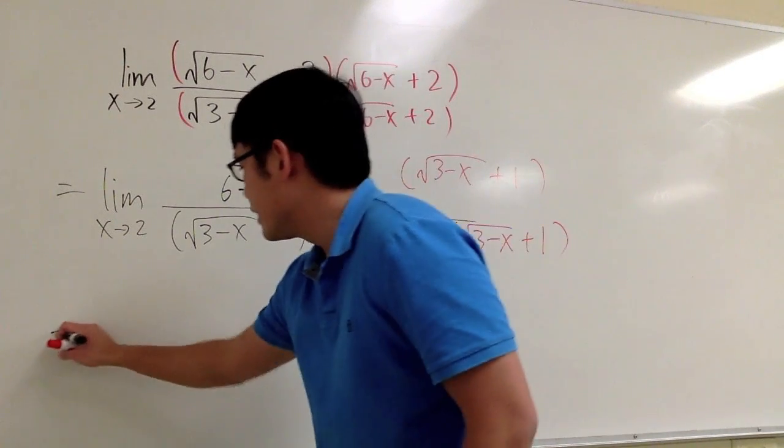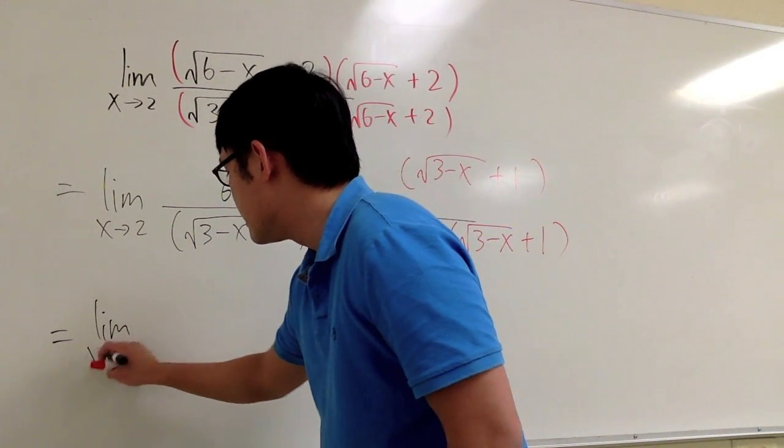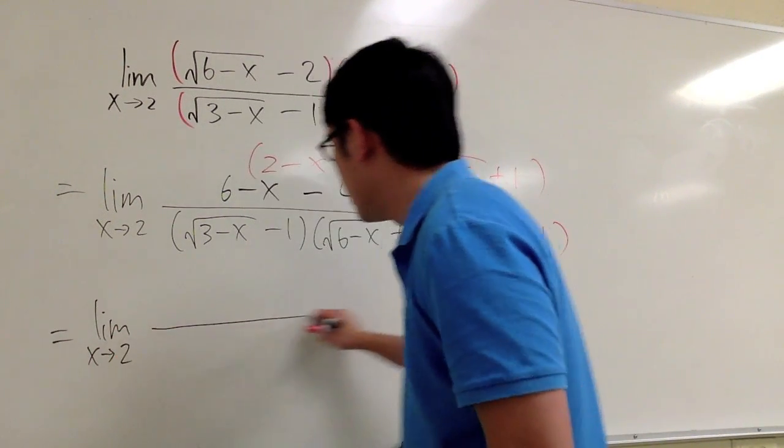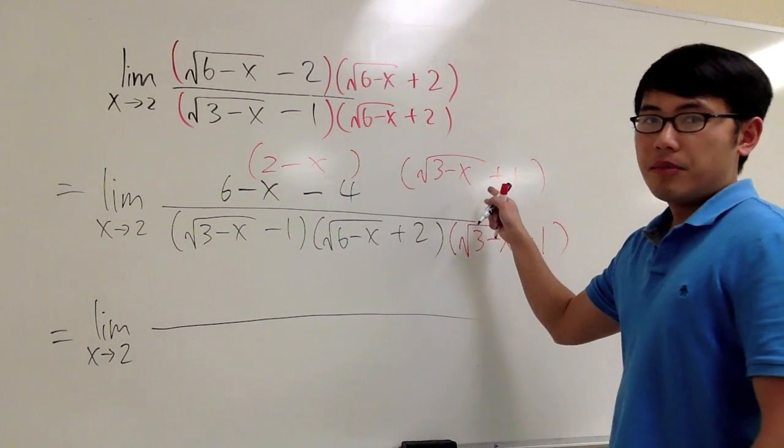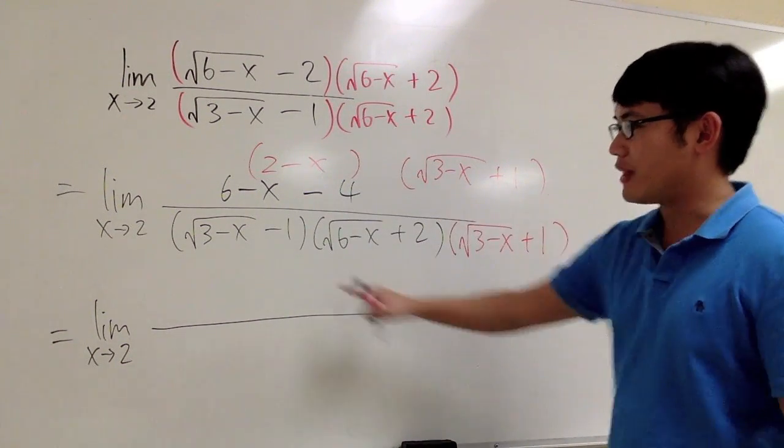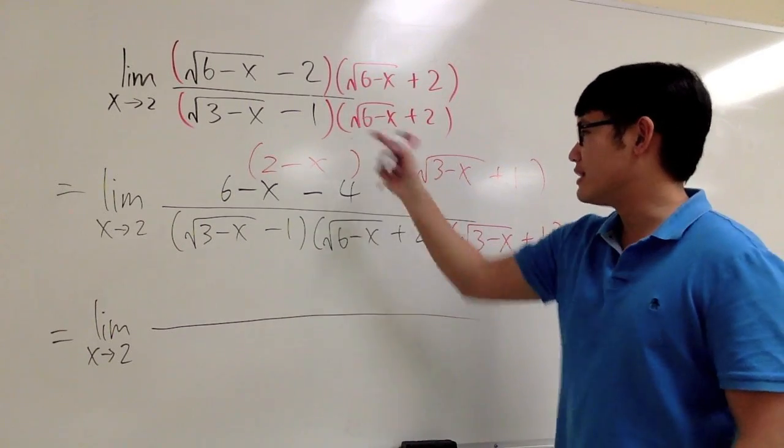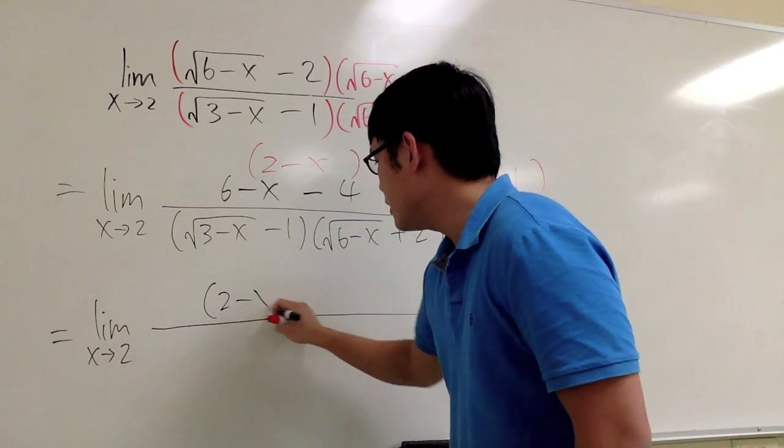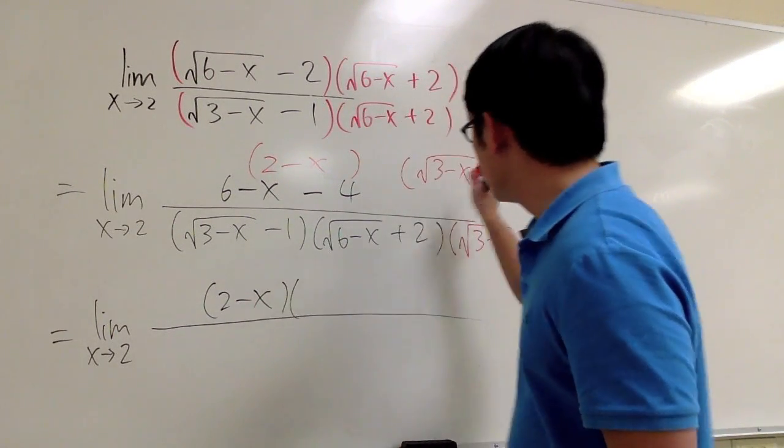And now what we are going to get is still the limit as x is approaching 2. On the top, because I'm not trying to fix that part, this conjugate was for that. So leave it as how it is and wait for a good thing to happen.